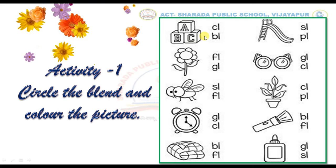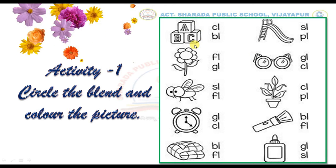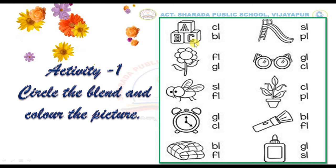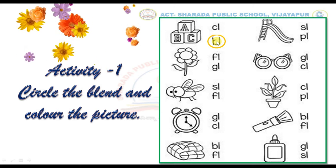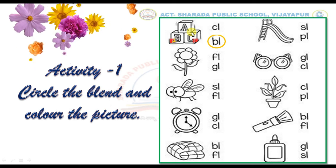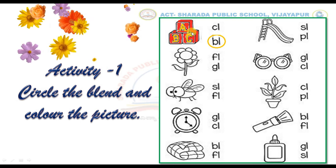For example, kids, can you identify which picture it is? Yes, you are right. It is blocks. Then, circle the blend like this and color the picture. In the same way, we have to complete the remaining ones.